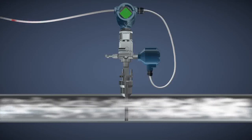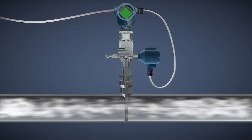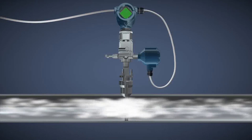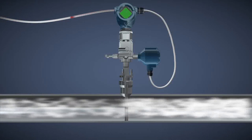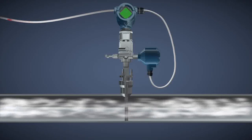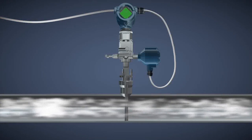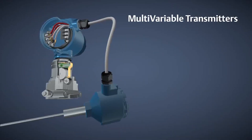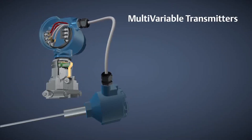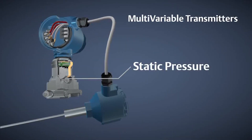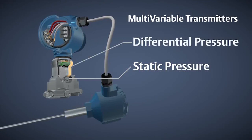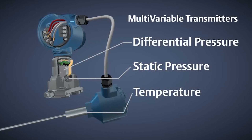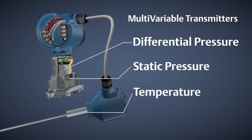Today's advanced multivariable transmitters perform a compensated mass flow calculation in the transmitter of the integrated flow meter. The multivariable transmitter measures static pressure, differential pressure, and process temperature in one device.